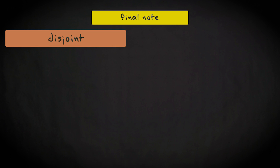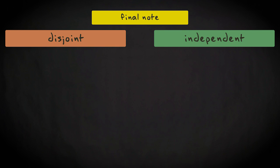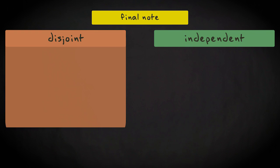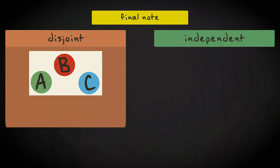And as a final note, it is important to be aware of the difference between disjoint events versus independent events. If events are disjoint, it means that if one event occurs, the others cannot occur. So, by definition, the joint probability is zero.